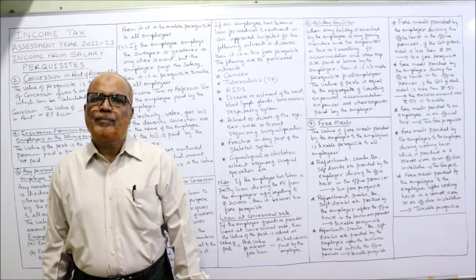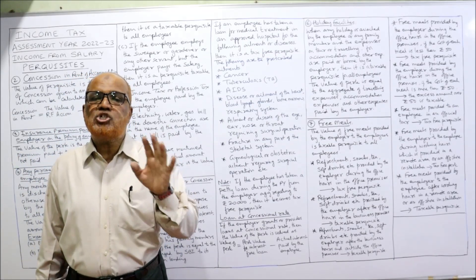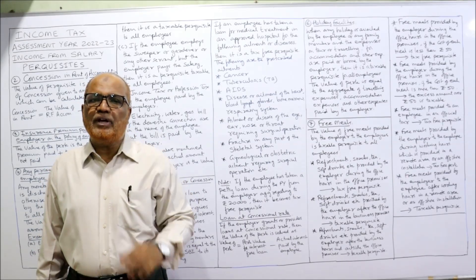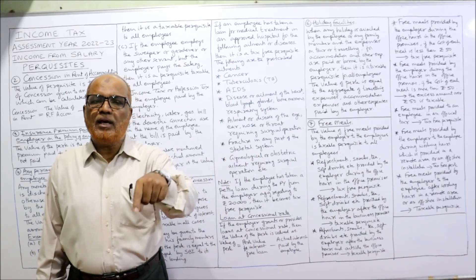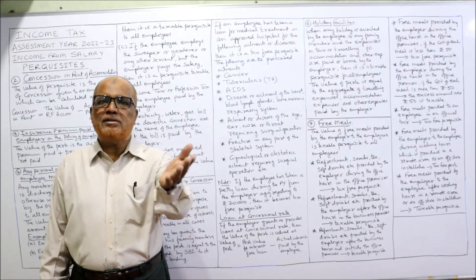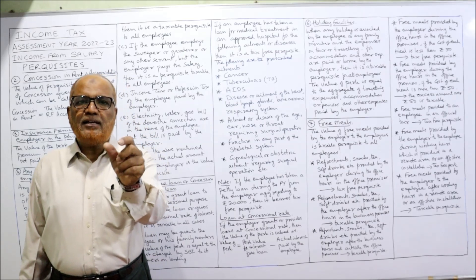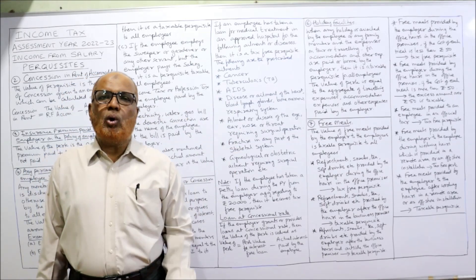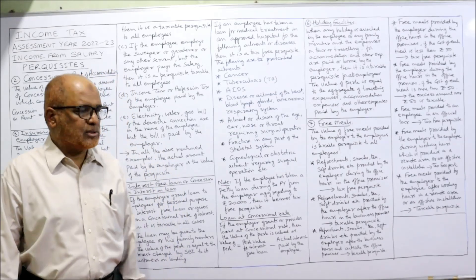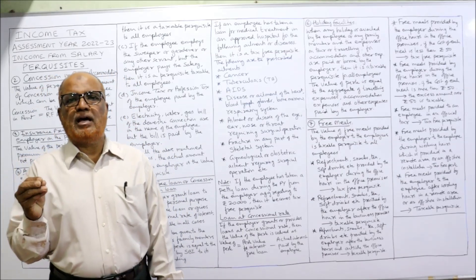For loans at concessional rates: if the employer gives a loan not interest-free but at a concessional rate — for example, SBI charges 15% but the employer charges only 5% — the concession is 10%. That 10% is calculated on the loan amount to get the value of the perquisite. That concludes the fifth item — fully taxable perquisites in the hands of all employees.